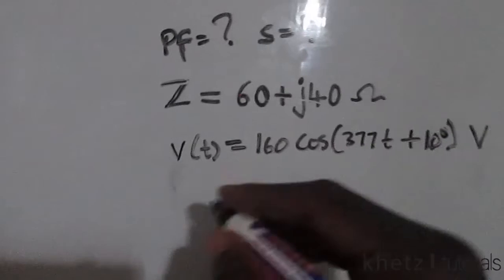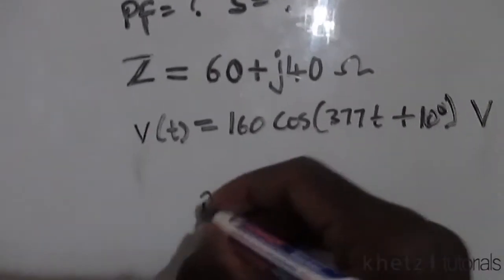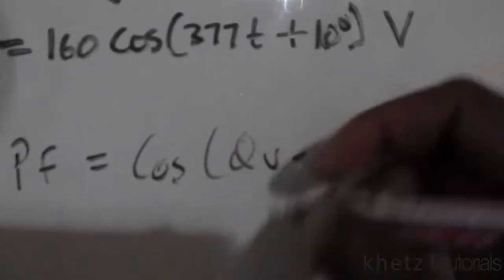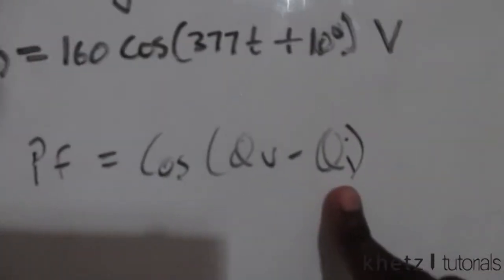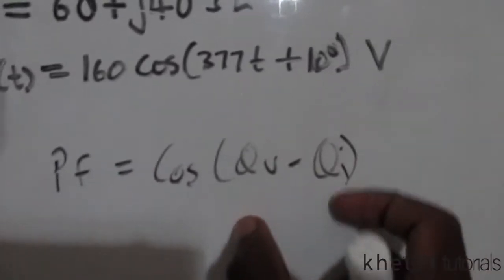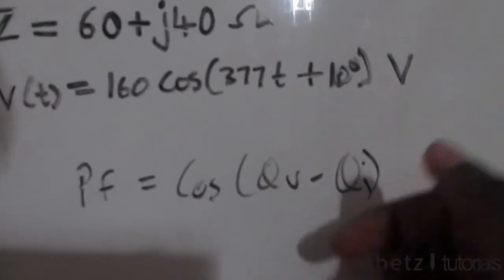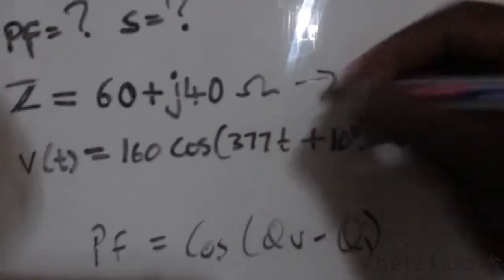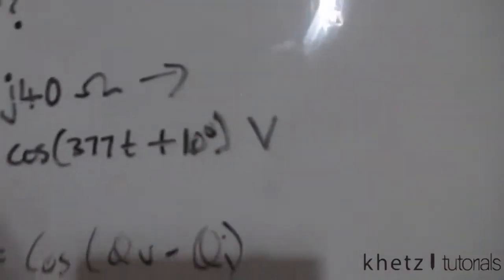We know that the power factor is the cosine of the angle of voltage subtract the angle of current. But this same angle is the same as the angle which you may find from the polar form of the impedance.